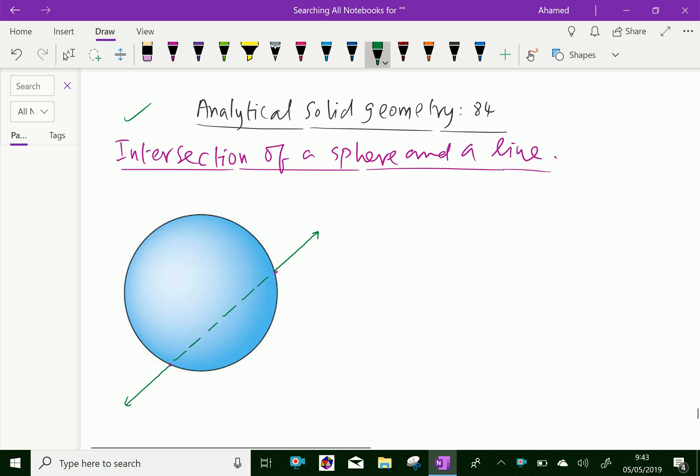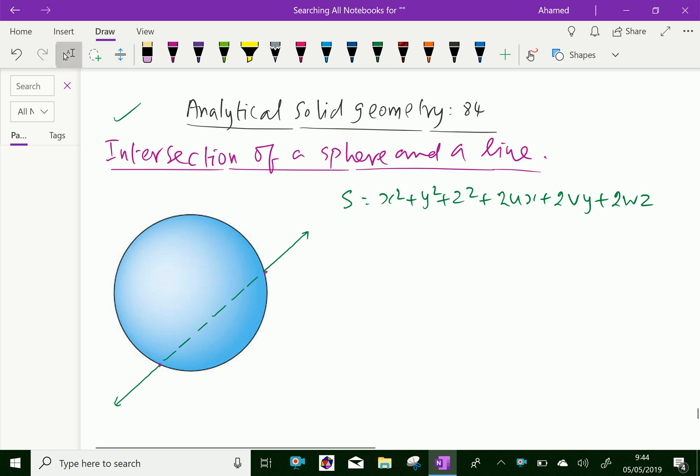Here, in the figure, the sphere and a line intersect at these two points. Now, let the equation of the sphere be x squared plus y squared plus z squared plus 2ux plus 2vy plus 2wz plus d equal to 0.